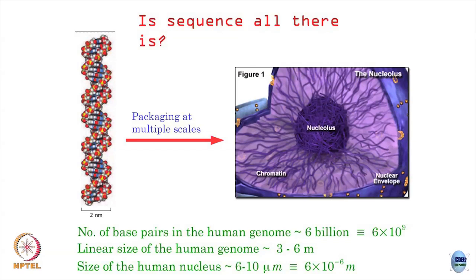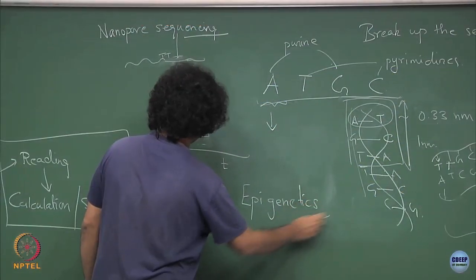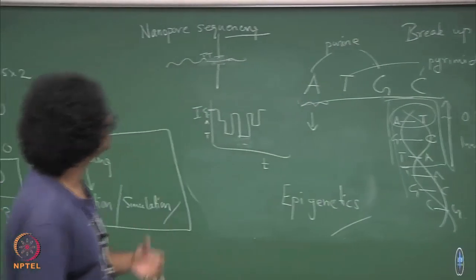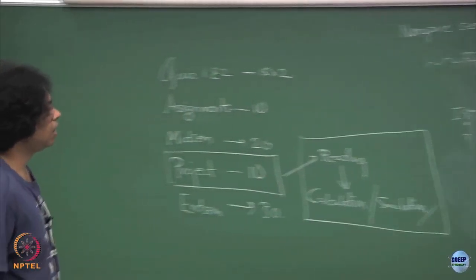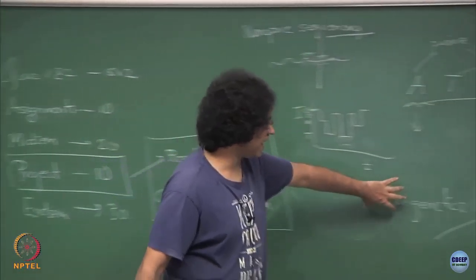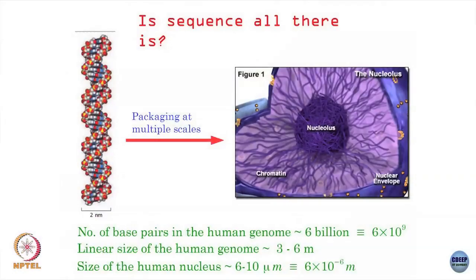Once we did the sequencing, we found out that genetics — or the sequence information — is not all there is. There is something above and beyond genetics, and that is given a fancy name called epigenetics. I will explain a few aspects of how you control the genome. It is at a level higher than the genome — the epigenome. I will talk a little bit about what comprises this epigenome.